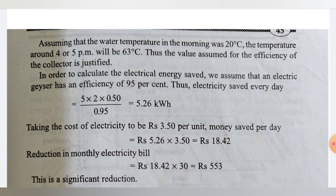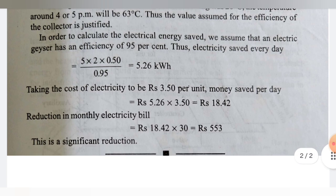In order to calculate the electrical energy saved, we assume that an electrical geyser has an efficiency of 95 percent. Thus electricity saved every day equals 5 (kWh) × 2 (m²) × 0.50 divided by 0.95, which gives 5.26 kilowatt-hours.